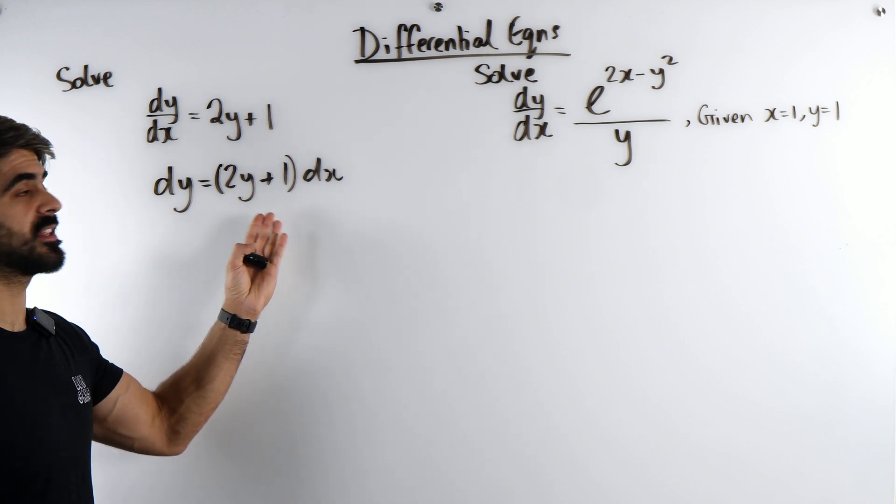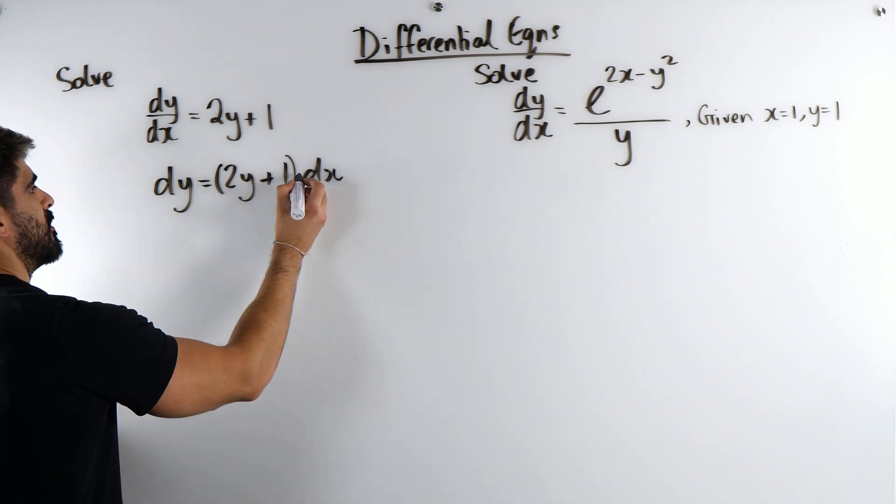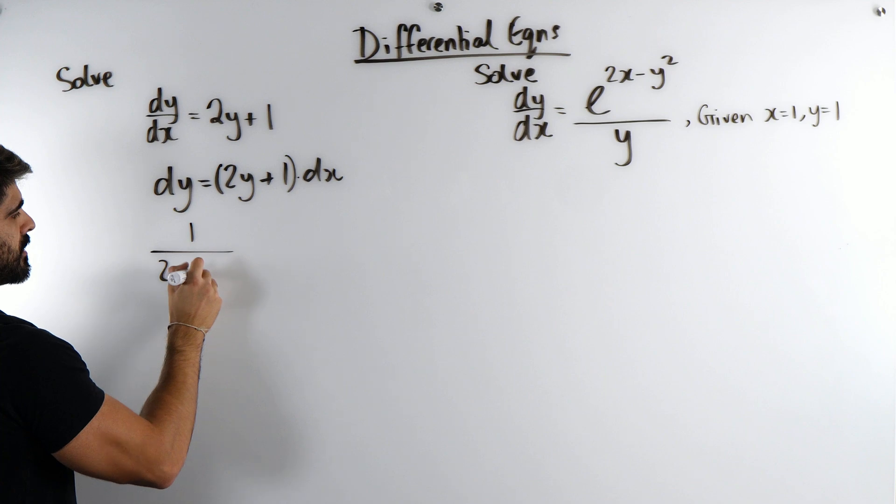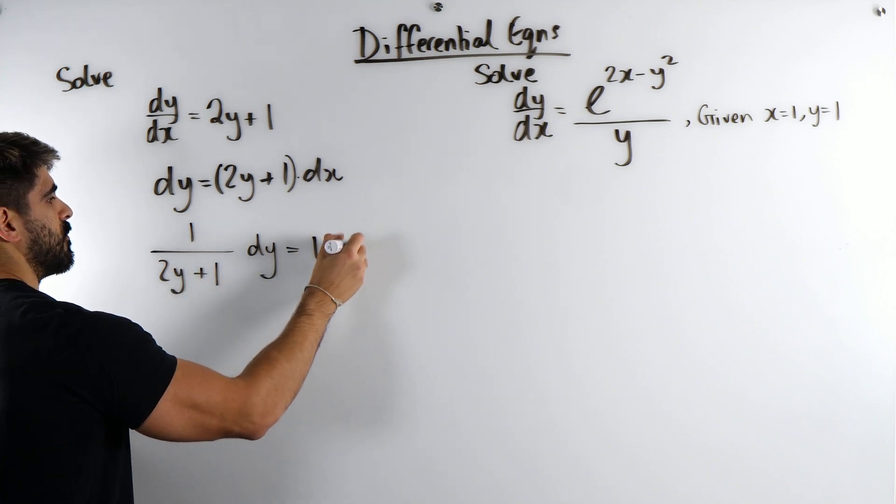So this then indicates that the only way to get this onto this side is we need to divide by the bracket. Remember, this is a multiplier, right? So we divide by this, we get 1 over 2y plus 1 dy is, and we'll just be left with 1 dx.